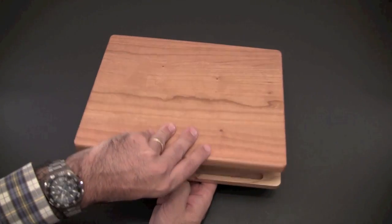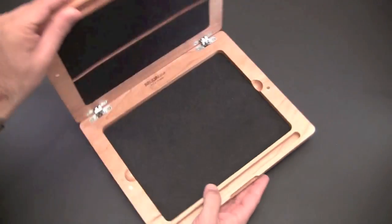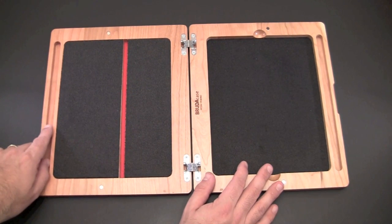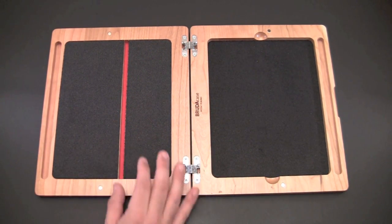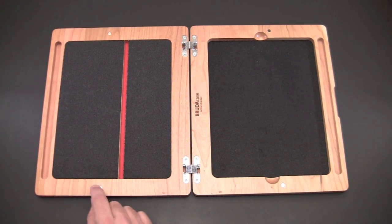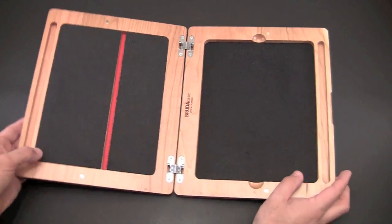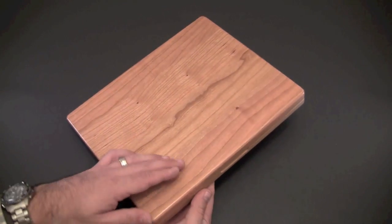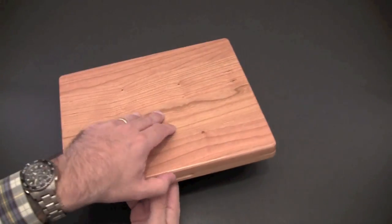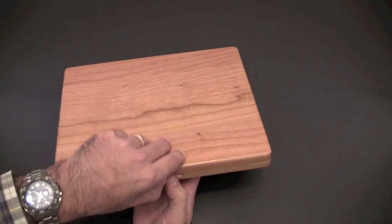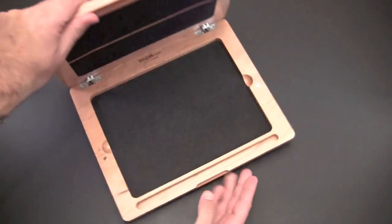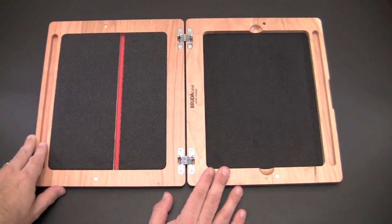To open it you kind of pry it open from the little opening there and I'll first open it all the way flat so you can see the inside and get a full bird's eye view. Now it has four magnets that actually lock it closed so that when you're transporting the case around, it will not flap open and your iPad won't come out. It does make it a little bit challenging to open because the magnets are pretty strong, but once you get the hang of it it's easy to pry out.